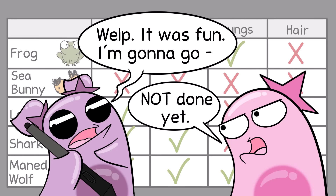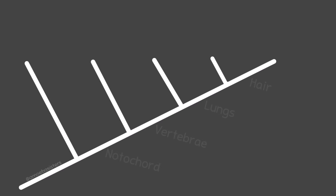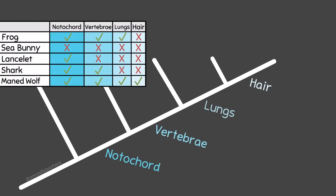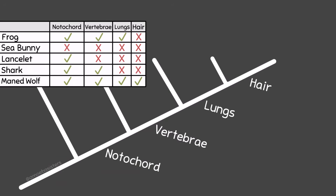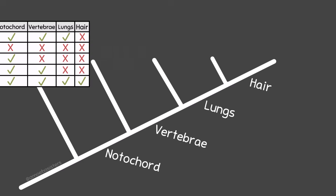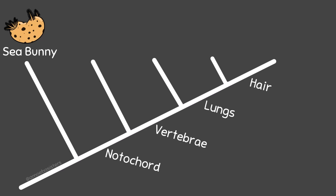Let's build a cladogram — a diagram that serves as a hypothesis for possible evolutionary relationships among these organisms based on these shared characteristics. I'm going to make a line and put the characteristics along here, starting with characteristics shared by all organisms in the group and moving to those shared by smaller groups. This is arranged using the most simple branching pattern, reflecting parsimony — meaning it is drawn using the fewest number of evolutionary changes for the characteristics listed. I'll add each organism based on the characteristics it has. For example, the sea bunny has no notochord, so I'm placing it before that characteristic. The lancelet has a notochord but no vertebrae, so it goes after notochord but before vertebrae.